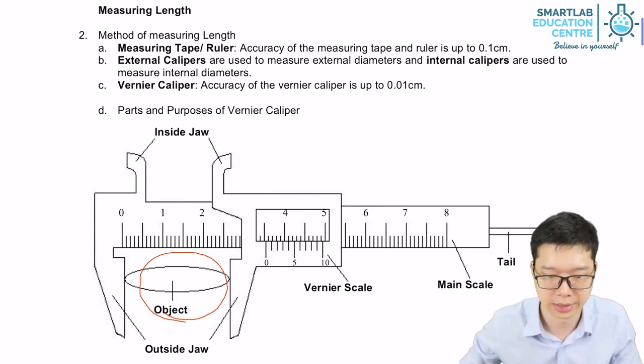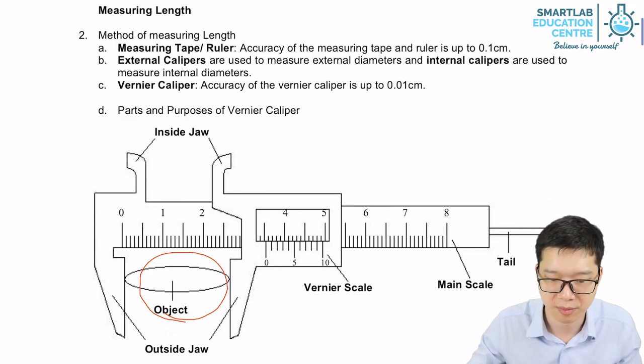Then after we get the readings, how are we supposed to read from the Vernier Caliper?